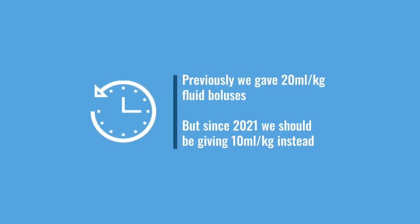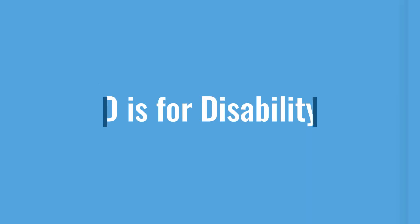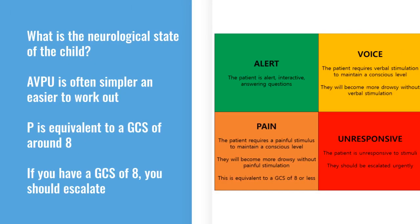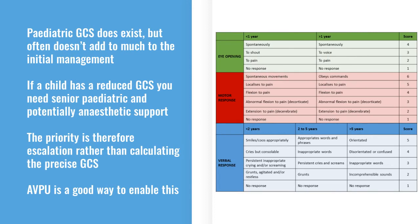Get IV or intraosseous access in early, and consider a fluid bolus. Note that we used to give 20 mls per kilogram, but the most recent APLS guidelines now recommend 10 mls per kilogram for every child. D is for disability — assess the child's neurological state using the AVPU score, which is often much more easily gained in a child than a GCS. A reminder: the P on the AVPU score equates to a GCS of approximately 8.